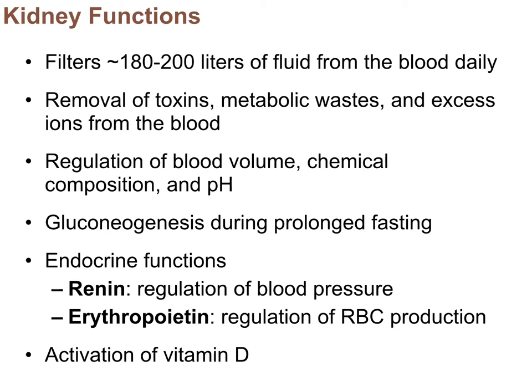Gluconeogenesis is the formation of glucose from a non-carbohydrate source, and the kidneys can stimulate that process. We already learned that the kidneys release renin, causing the renin-angiotensin cascade. And from the blood chapter, the kidneys release erythropoietin, a hormone that increases erythropoiesis — red blood cell formation.